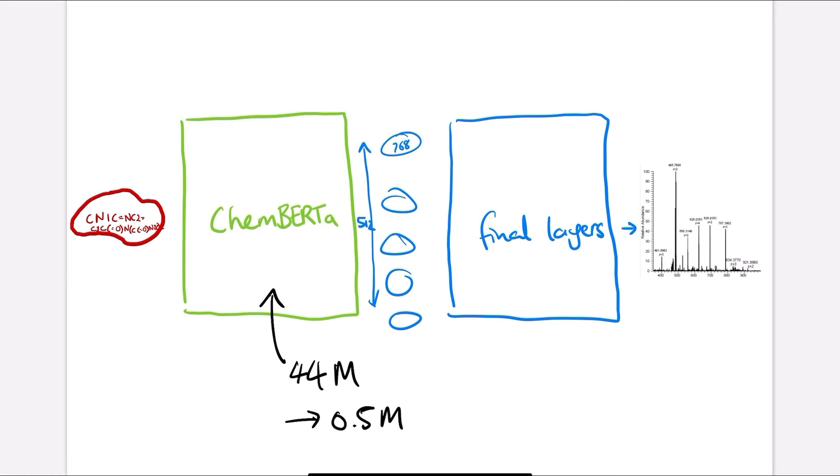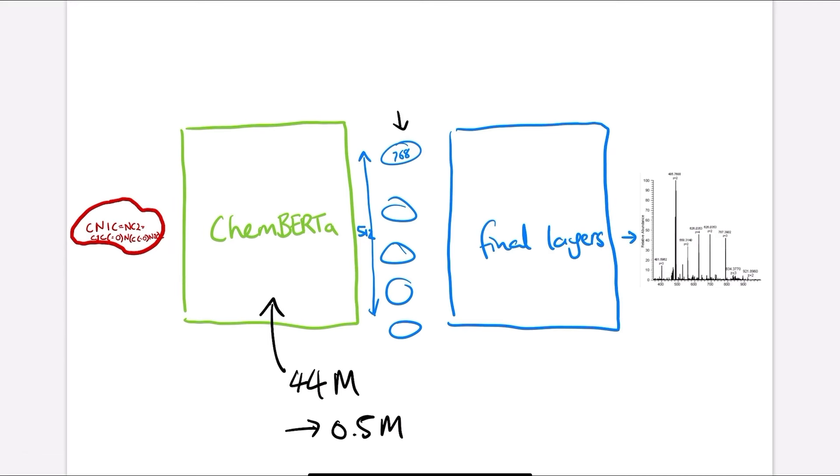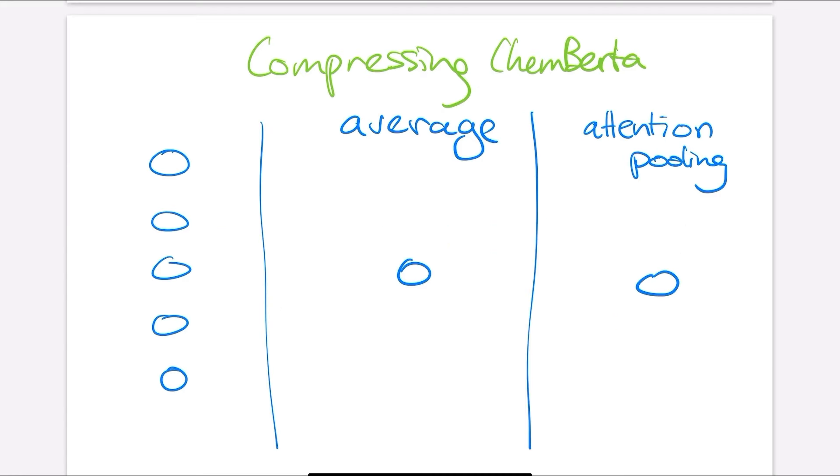However, we still had a huge problem where the output of ChemBERTA is also really massive. So for every part of this molecule, you get a vector which has length 768. And so if there's 512 parts of that molecule, which is the maximum, then you already have around 400,000 parameters just to describe the output. And if this final layer just does a really simple, like one linear layer thing to try and get 10 fragments, this would already make this an 8 million parameter model, which we didn't think was trainable with the amount of data we had. The idea was we needed to somehow compress all of that information that came from ChemBERTA.